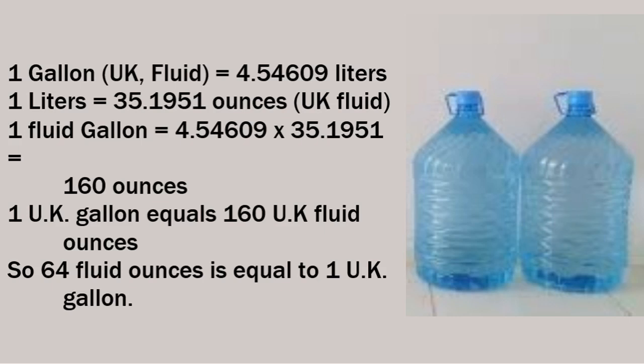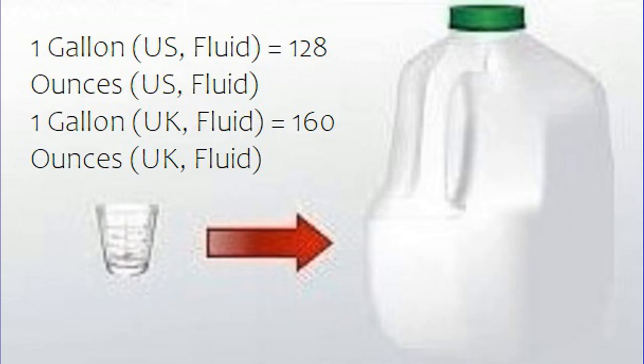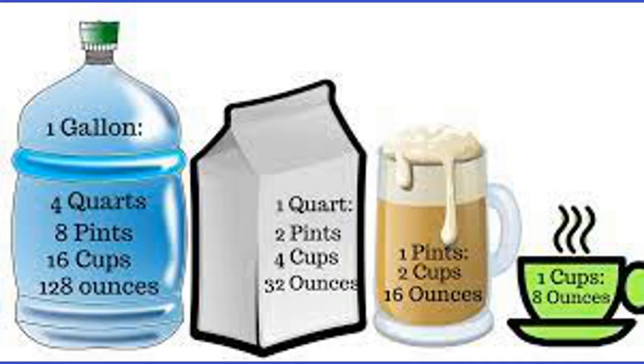One gallon (UK fluid) equals 4.54609 liters. One liter equals 35.1951 ounces (UK fluid). One fluid gallon equals 4.54609 × 35.1951 = 160 ounces. So one UK gallon equals 160 UK fluid ounces. Therefore, the answer is: one gallon (US fluid) equals 128 US fluid ounces, and one gallon (UK fluid) equals 160 UK fluid ounces.